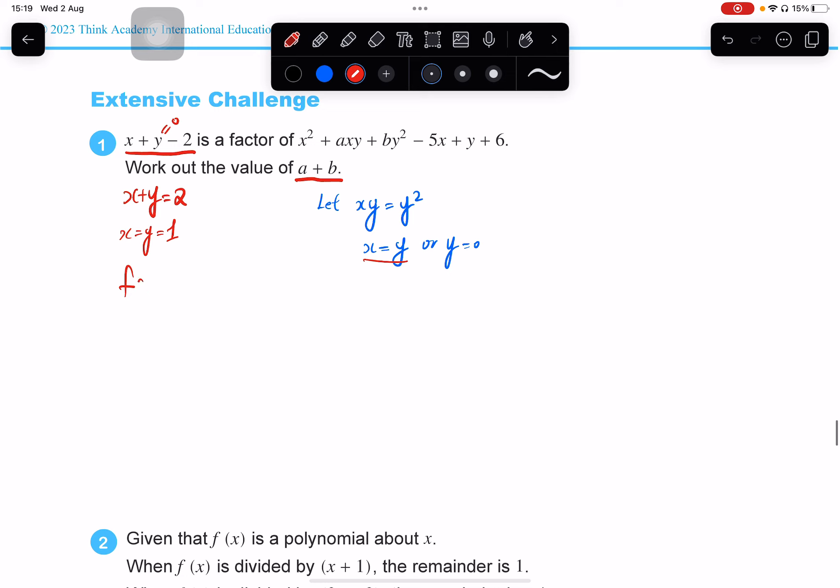Now we just need to substitute f(x,y) equals f(1,1). And that's going to be equal to 1 squared, which is 1, adding 1 times 1 times a, that's a, adding 1 times 1 times b, that's b. So that's going to be take away 5, adding 1, adding 1, adding 6 equals 0.